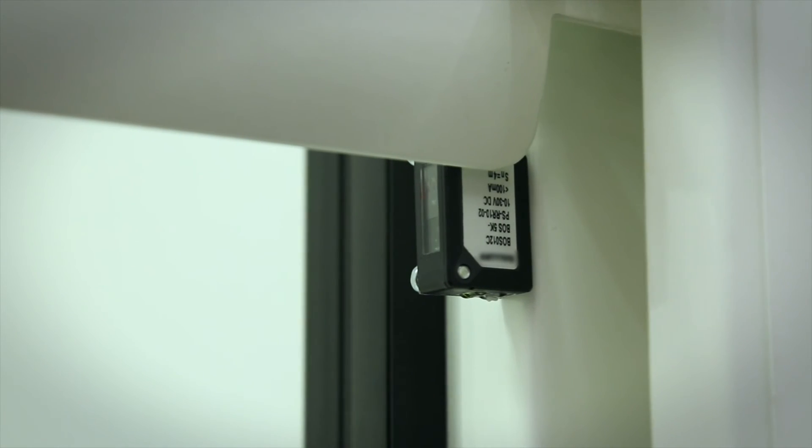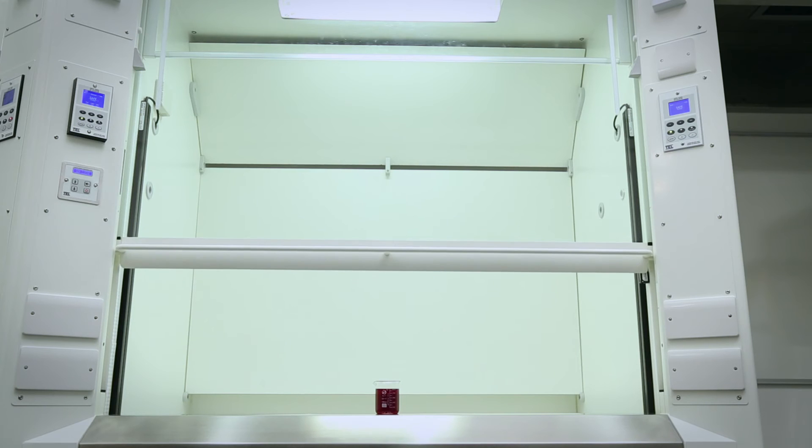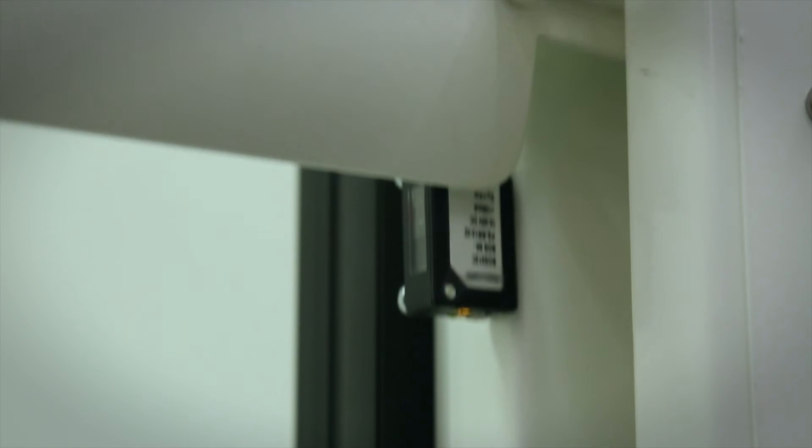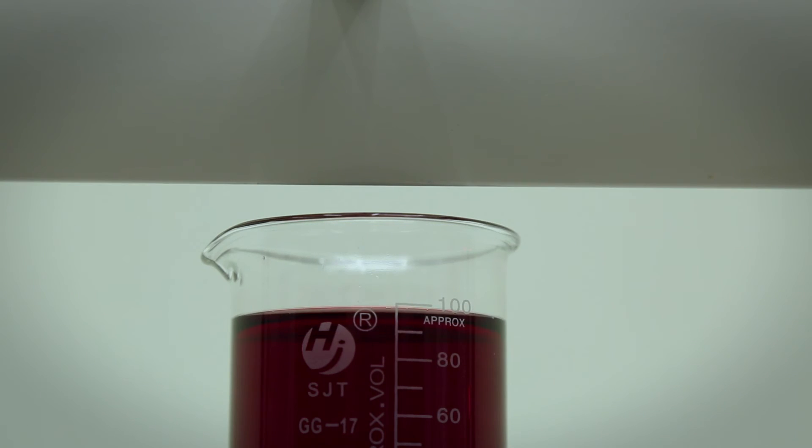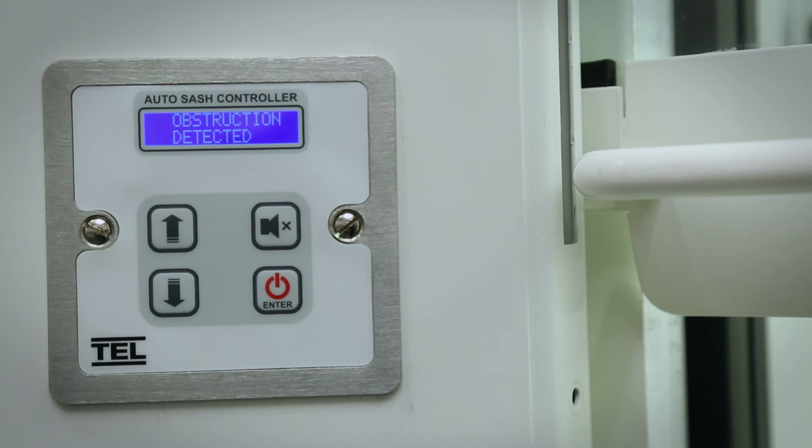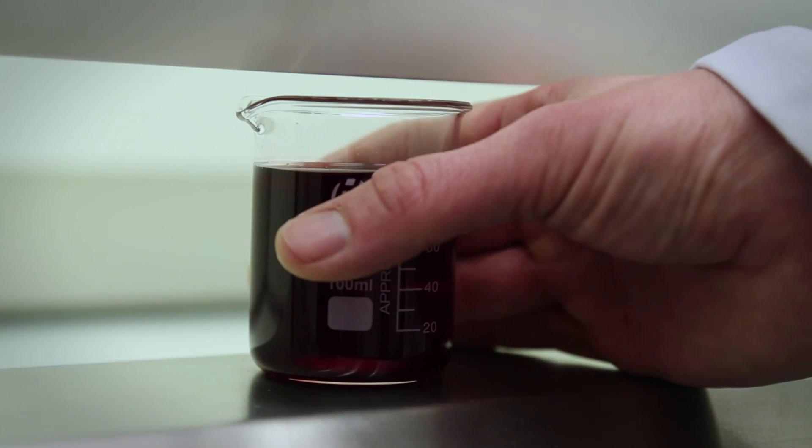The under sash sensor creates a single beam underneath the sash handle. If at any point during the closing sequence this beam is broken, the auto sash drive will be disabled and will give audible and visual alarms. Once removed, the auto sash will automatically reset.